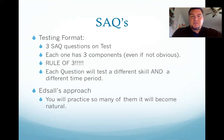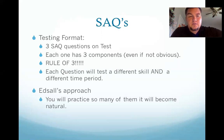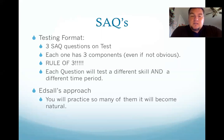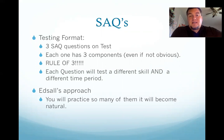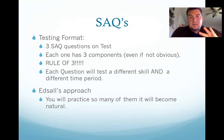You have to answer the first two and they give you a choice on which set you want to answer for questions three and four. Each one of the SAQs has three components — it's asking for three different things. The rule of three: any time you have an SAQ, you have to make sure that you have addressed three things. That's really, really important.